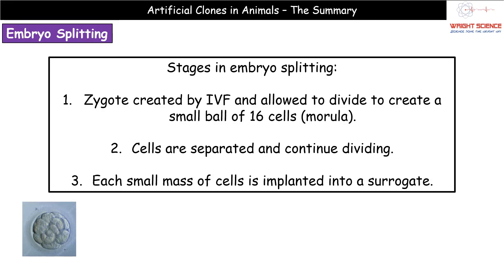Once they've been introduced and fertilised, they form the zygote. We allow them to go through cell division to create a small ball of about 16 cells called a morula. What we then do is separate those cells and they continue dividing — hence embryo splitting. We literally split up that ball of cells, and then each of these small masses of cells is implanted into a surrogate, where they will hopefully grow, develop, be born, and be genetically identical to one another.